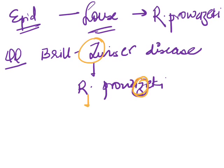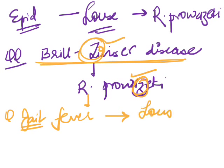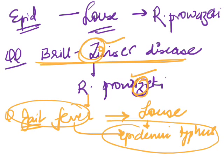Brill-Zinsser disease is the mild recrudescent form of epidemic typhus. If a patient gets epidemic typhus when young and is not treated with antibiotics, then when the patient gets old or becomes immunocompromised, this recurrent milder form appears — called Brill-Zinsser disease. Also, jail fever refers to epidemic typhus: in jail, unhygienic conditions favor louse, louse causes epidemic typhus. So jail fever is another name for epidemic typhus caused by Rickettsia prowazekii.